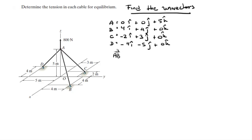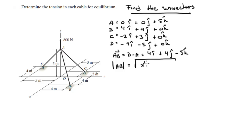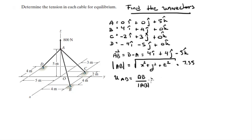To find the unit vector from A to B, you first find the vector AB = B minus A, which gives 4i + 4j - 5k. Then find the magnitude: sqrt(4² + 4² + 5²) = 7.55. Dividing the vector by its magnitude gives the unit vector: 0.530i + 0.530j - 0.662k.